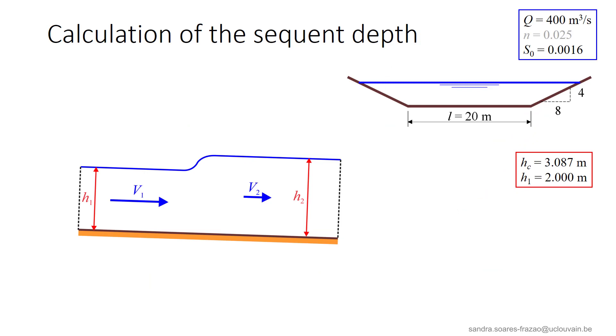Let us consider this trapezoidal channel. For these flow conditions, indicated here, the critical depth is about 3 meters.